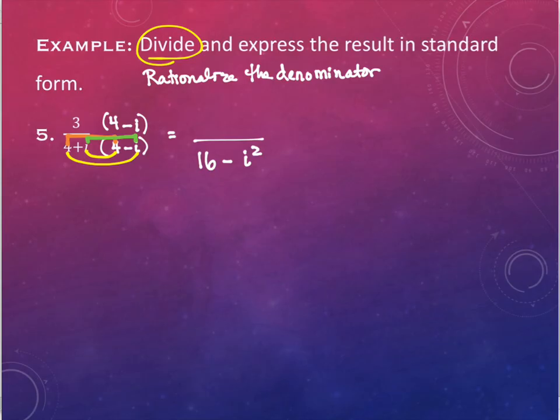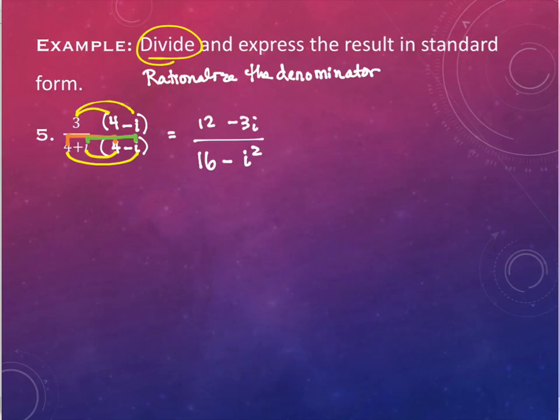Now, the numerator is not going to do that — there's no reason for it to. We're going to actually have to multiply the numerator out as per normal. So I have 3 times 4, which gives me 12. And then 3 times negative i gives me negative 3i. We're not done — there's still an i squared on the bottom.